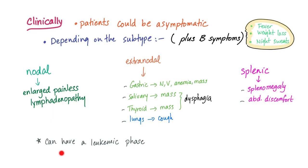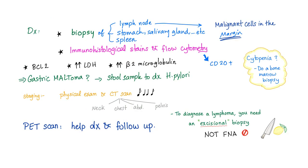Marginal zone B-cell lymphoma can have a leukemic phase, which makes sense because non-Hodgkin's lymphomas frequently have extranodal involvement and leukemic phases. To diagnose marginal zone B-cell lymphoma, you need a biopsy — the site depends on the subtype: biopsy the lymph node for nodal subtype, the stomach for gastric subtype, the salivary gland, or the spleen. You will find malignant cells in the margin of the lymph node in cases of nodal marginal zone lymphoma.